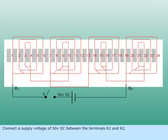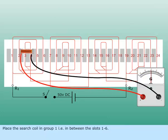Connect a supply voltage of 50V DC between the terminals R1 and R2. Place the search coil in group 1, i.e., in between the slots 1 to 6.